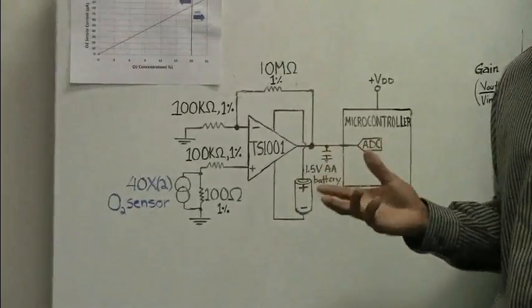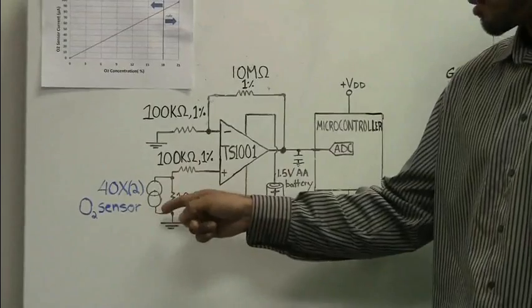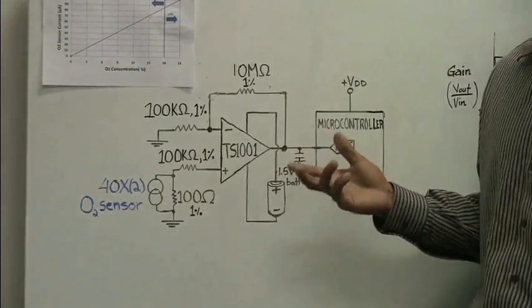The gain of 101 was chosen for convenience. For instance, with a maximum output current of 100 microamps out of the sensor, the output voltage will simply be 1 volt.